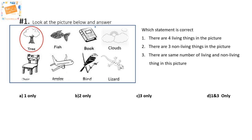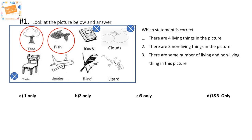Fish is an animal — it needs to breathe and moves on its own, so fish is a living thing. Book is man-made and is a non-living thing. Clouds and sun are natural things and are non-living things. Chair is man-made, which is non-living. Airplane can move from one place to another, but not on its own — it's through a machine and it is man-made, so it's a non-living thing. Bird and lizard both fall under the animal category and are living things.